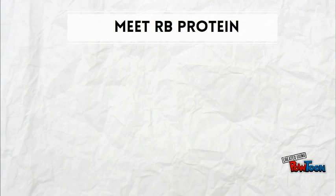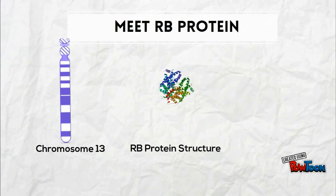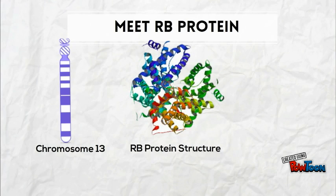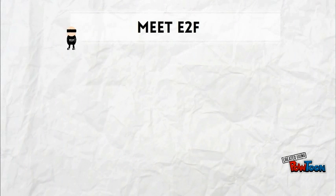The tumor suppressor protein retinoblastoma is found on chromosome 13. Retinoblastoma structure has two domains, A and B. The former is a pocket domain permitting binding of E2F. You can think of RB as your friendly police officer. E2F is a transcription factor.